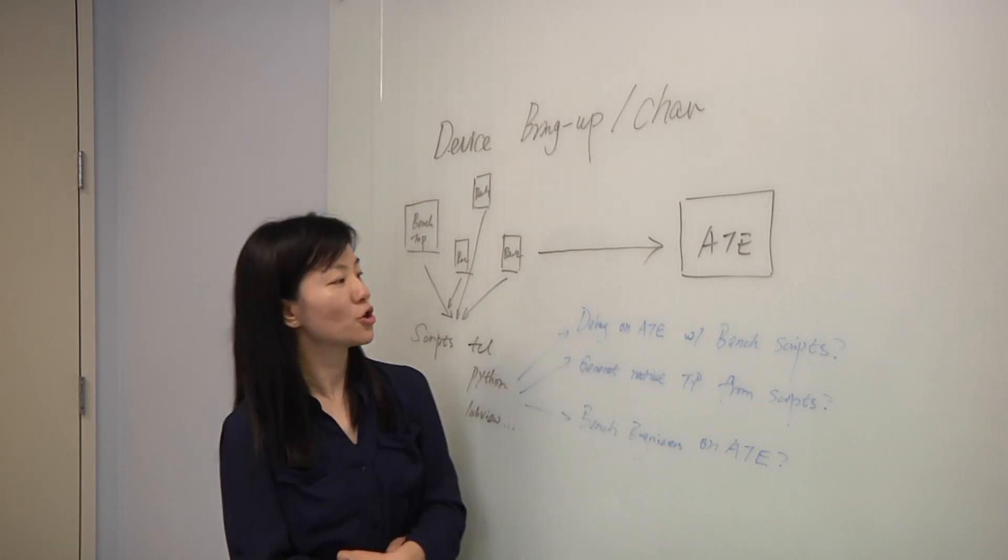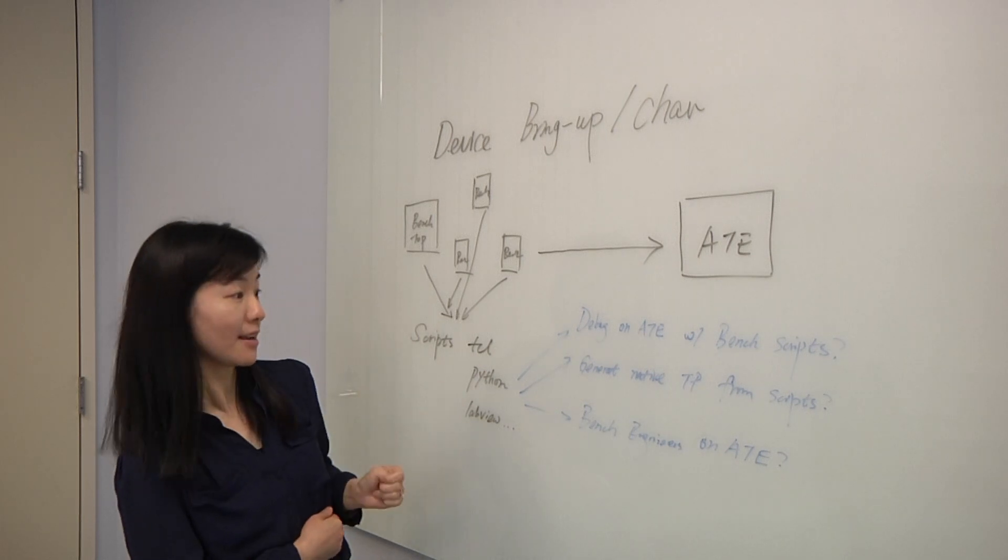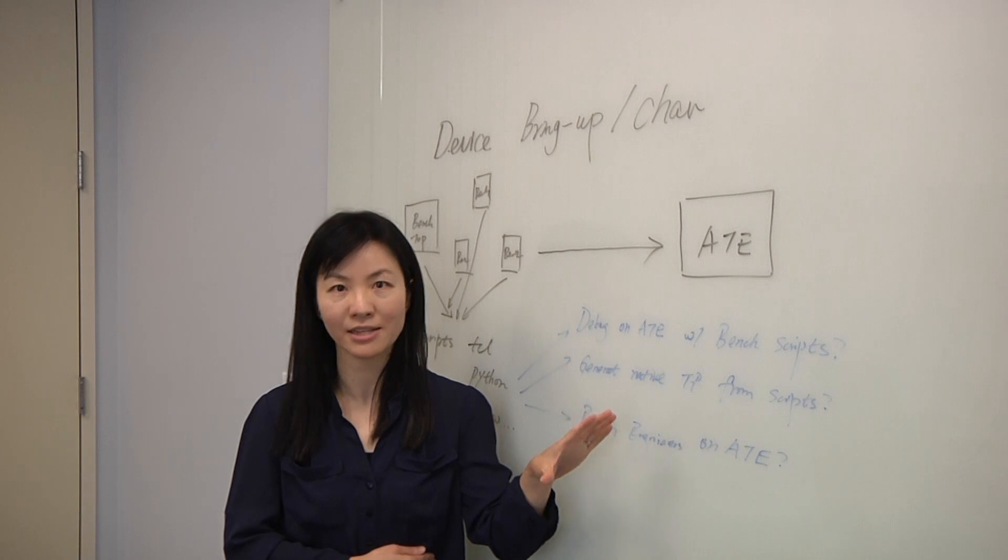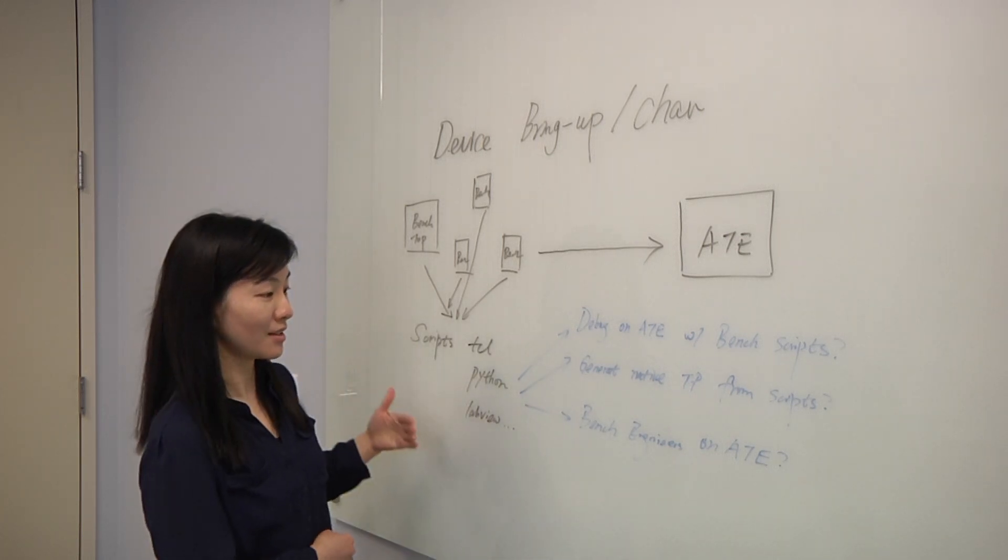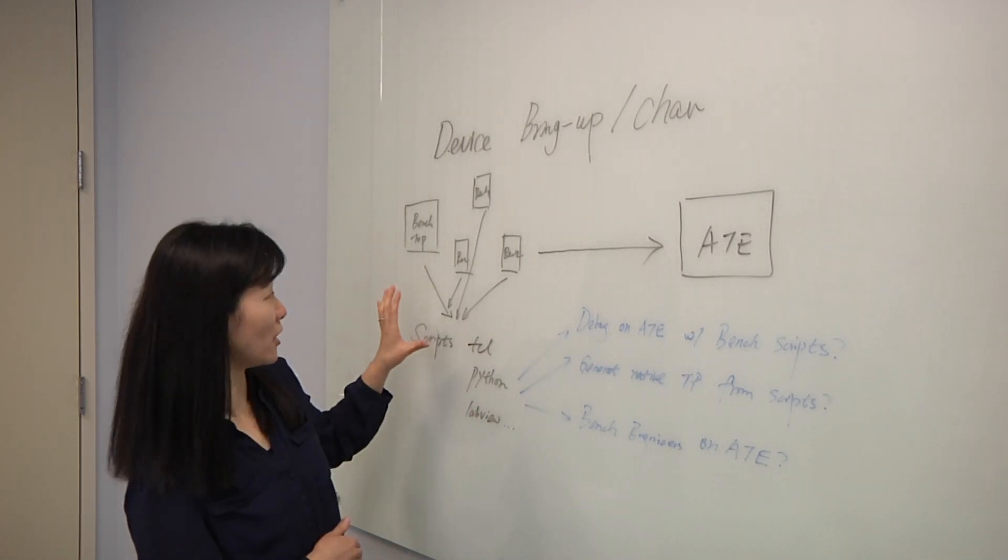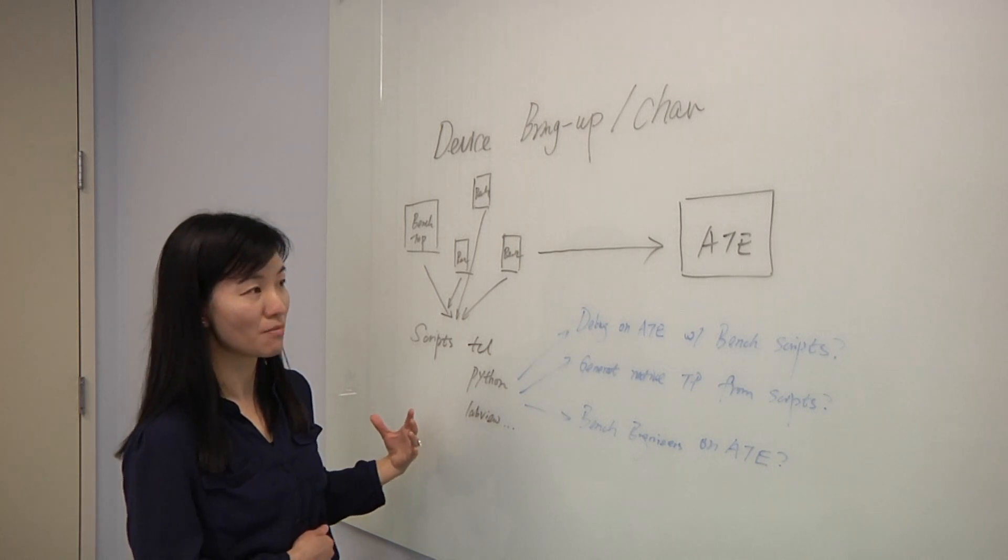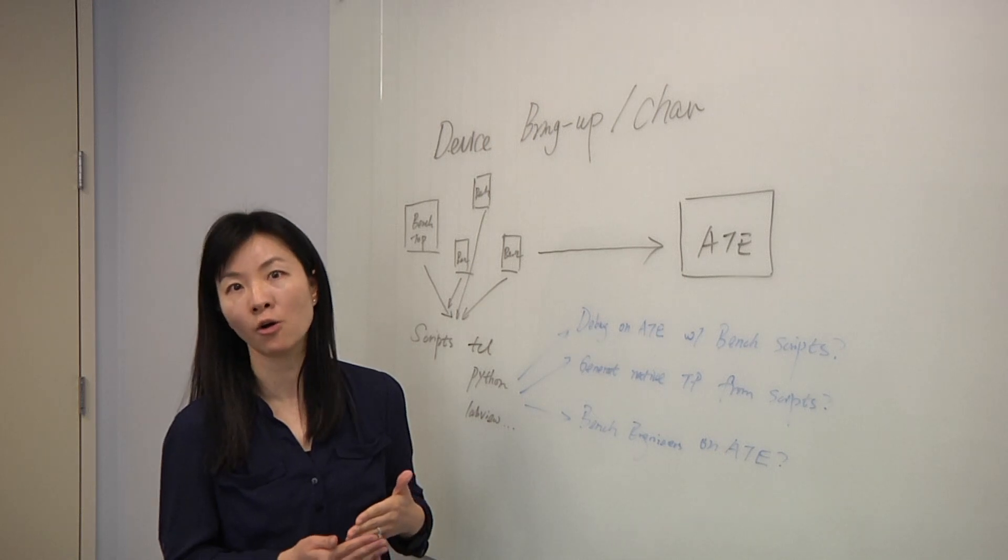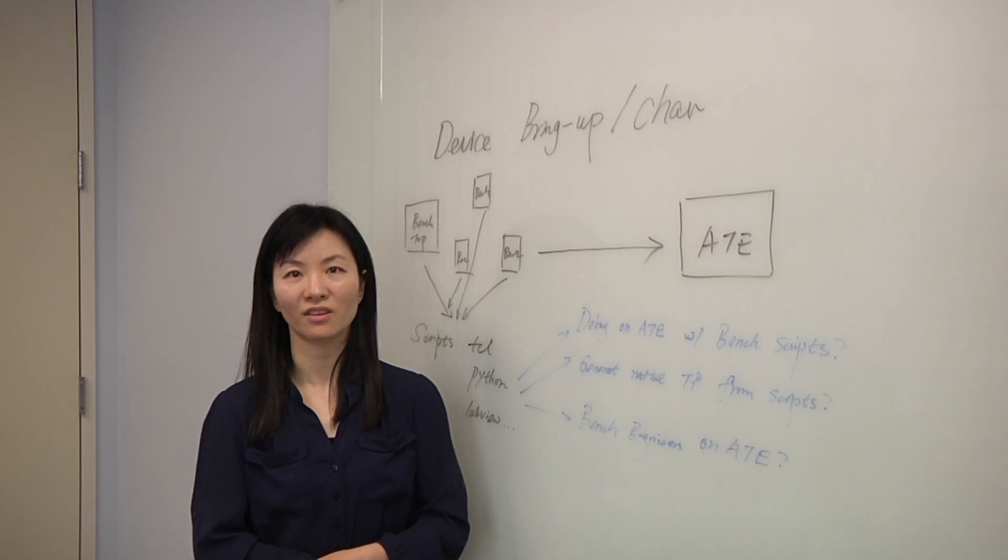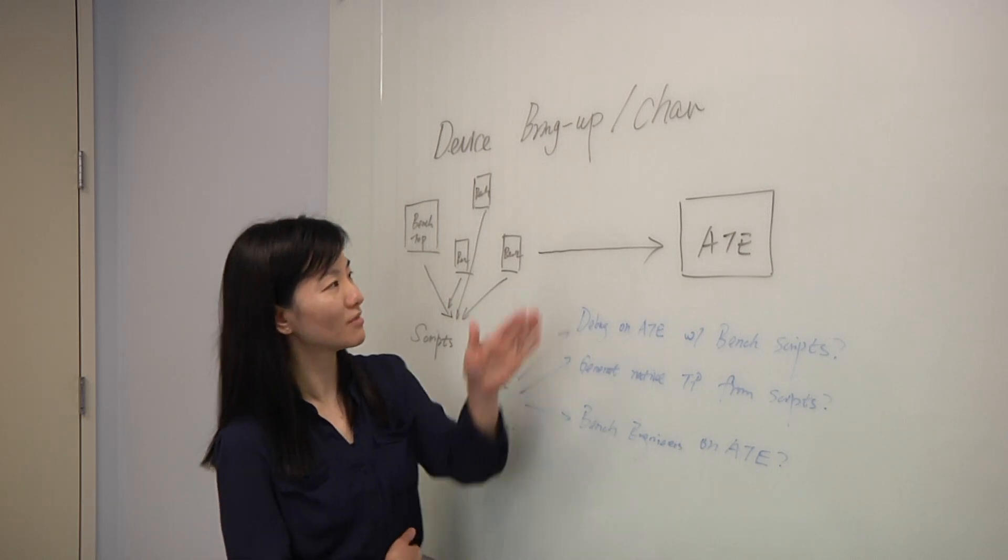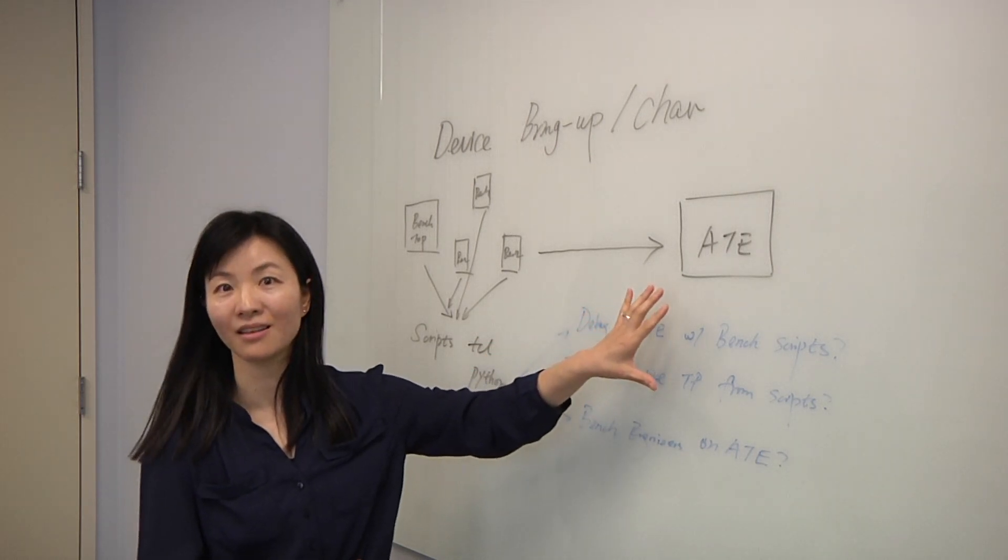So what are the challenges there? The challenges are, first, if you want to debug on ATE with bench scripts, it's not native. And secondly, it's very hard to generate native test program on the tester from the scripts. We don't have those automated tools to do that. And the third one is the bench engineers, they don't know how to use ATE. They are very familiar with the benchtop instruments, but ATE is a totally different thing for them. So in order for them to actually see the result on the ATE, they also need to cooperate closely with the test engineers to do so. This is a lot of people working together. It has to be driven to some extent top down as opposed to the different groups, right? Yes. So if we have a layer between those two worlds and can enable the same test scripts to be run on the ATE, that's going to be ideal.